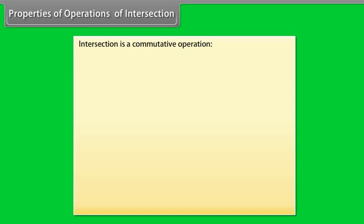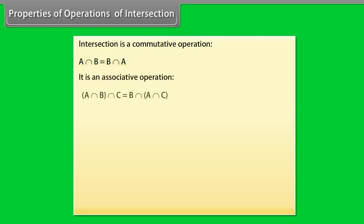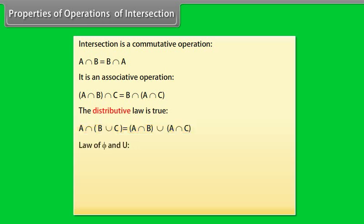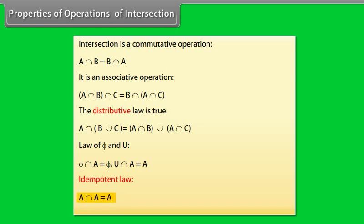Properties of operations of intersection. Intersection is a commutative operation: A intersection B is equal to B intersection A. It is an associative operation: A intersection (B intersection C) is equal to B intersection (A intersection C). The distributive law is true: A intersection (B union C) is equal to (A intersection B) union (A intersection C). By the law of phi and U: phi intersection A equals A intersection phi equals phi. By the idempotent law: A intersection A is equal to A.